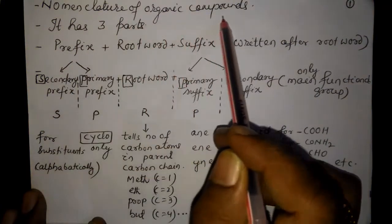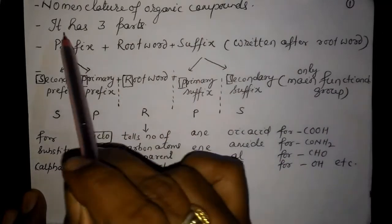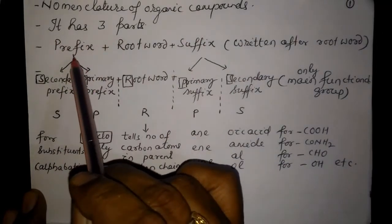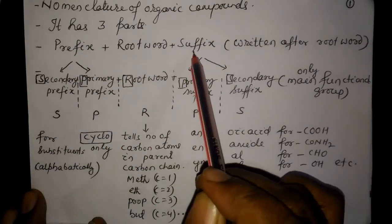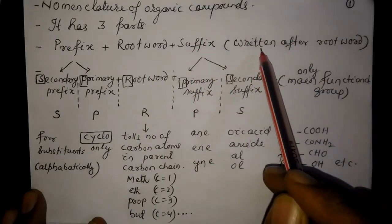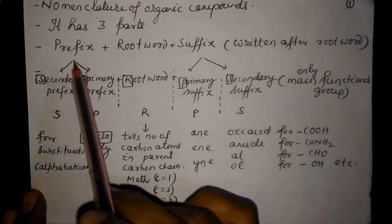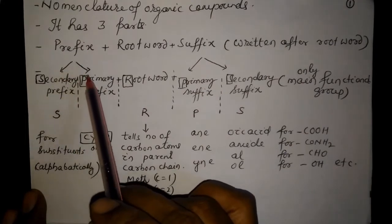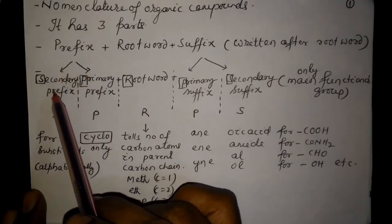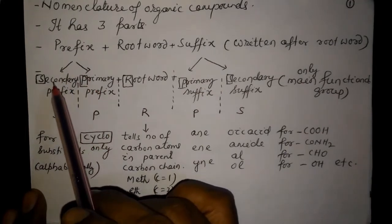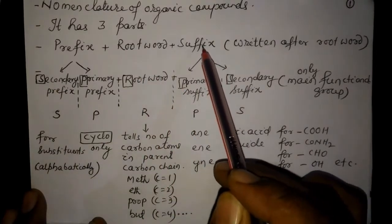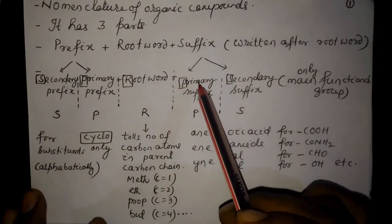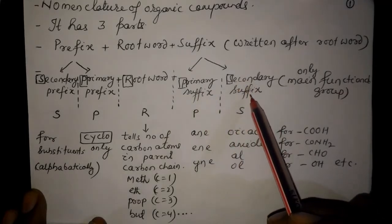Nomenclature of organic compounds has three parts: prefix, root word, and suffix. The suffix is written after the root word. Prefix is of two types: primary prefix and secondary prefix. The root word and suffix are also of two types each: primary suffix and secondary suffix.